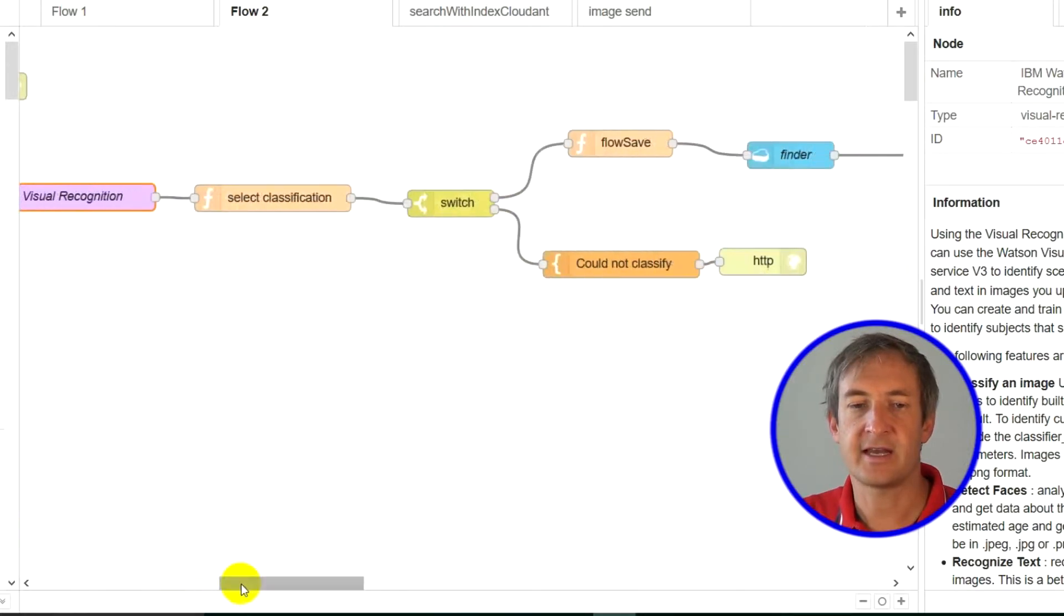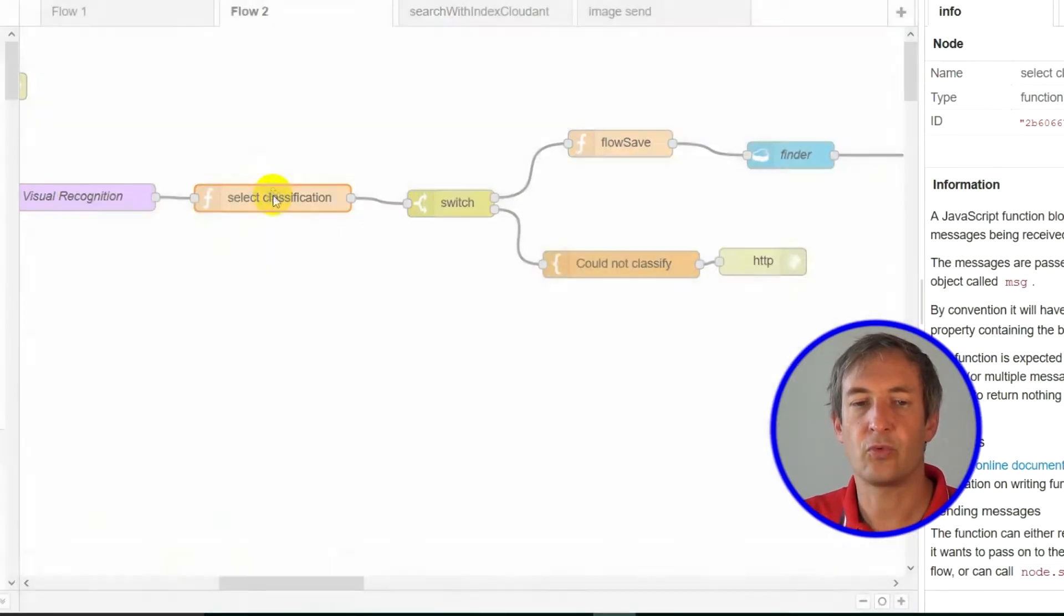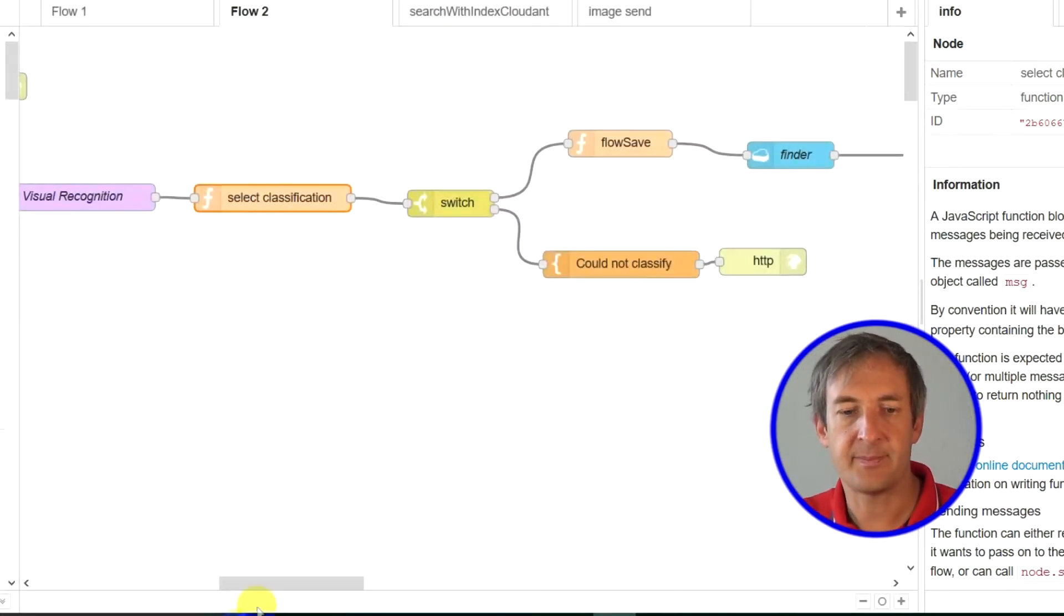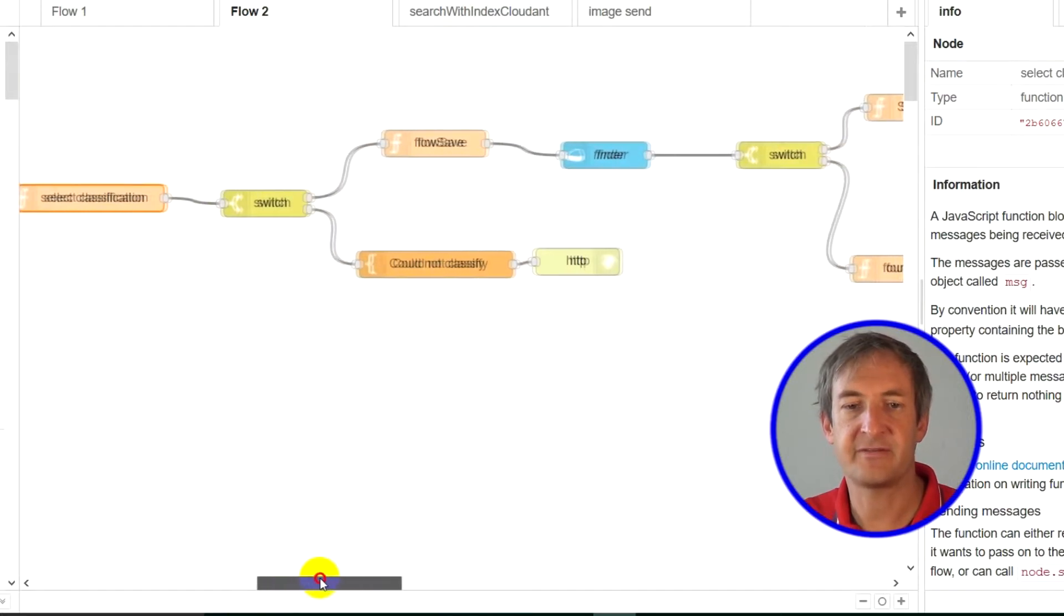And then here, I check what was the answer and get out a return or get the classification and the score. And it depends if we did find it or not. So, if it could not classify, we just say, no, we don't have any idea what it is. Please classify it.